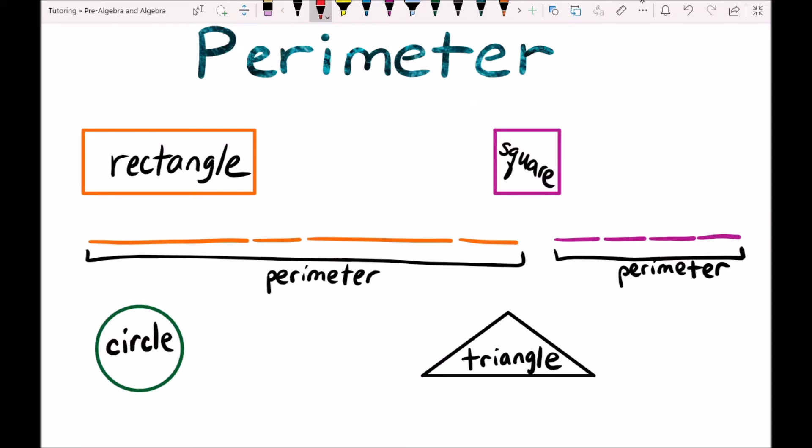So the rectangle has four sides. It has two short sides which we'll call the width, and two long sides which we'll call the length. L is for length and W is for width. So the perimeter P is equal to W plus W plus L plus L.